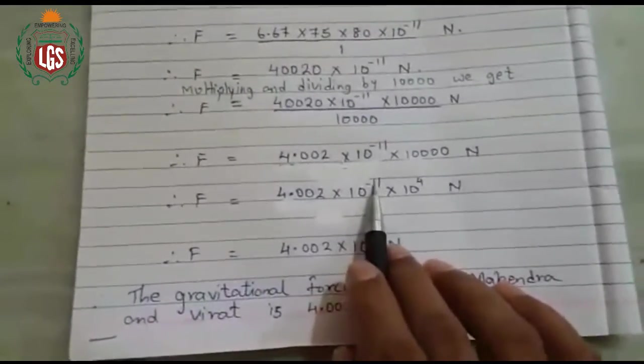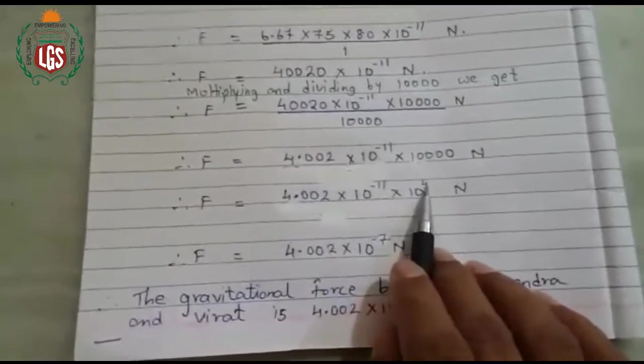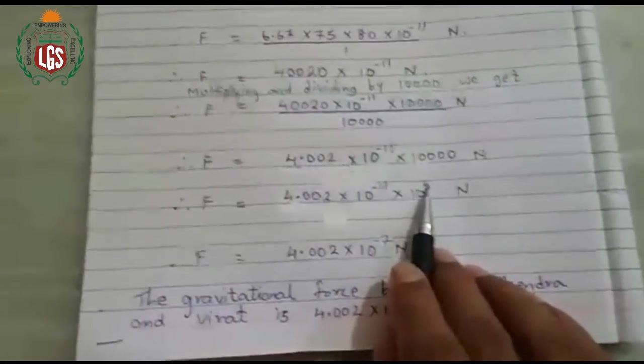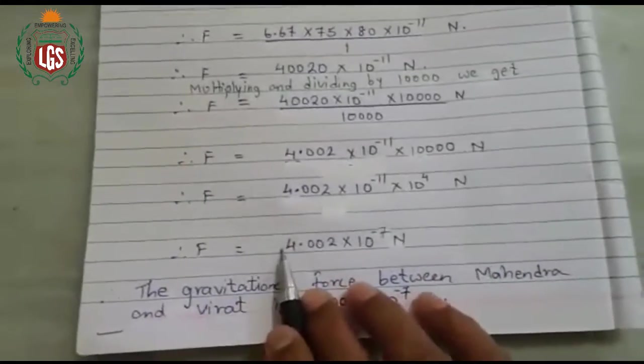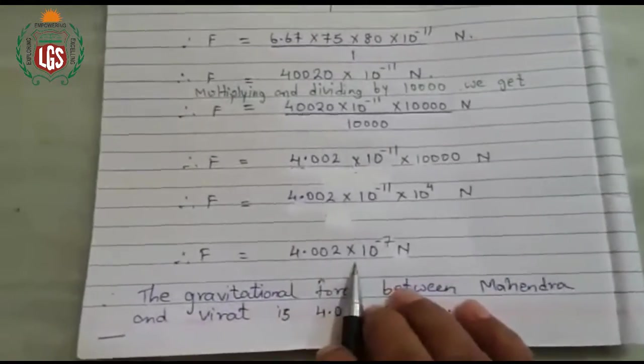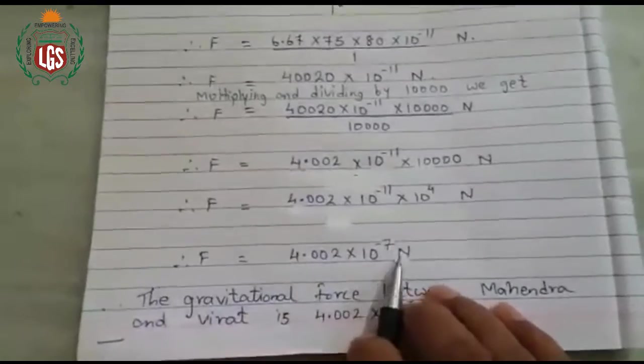Here 10 raise to minus 11 and 10 raise to 4. So minus 11 plus 4 will be minus 7. So your force is equal to 4.002 into 10 raise to minus 7 Newton.